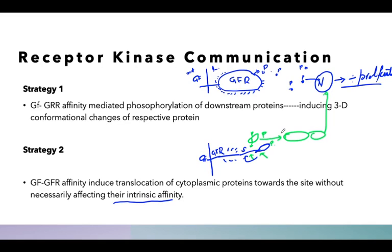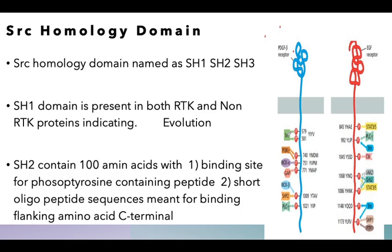So far, both strategies have a very thin line to distinguish them, but largely the second model has been more appropriately acknowledged. This has been established. Now, in the second part, how do we come to know that this is the right signal, the right receptor, and that the floating cytoplasmic protein binds with the right receptor?